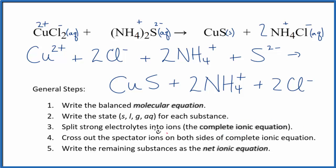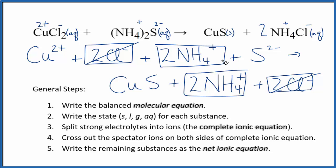Now we can cross these spectator ions out that are on both sides. So in the reactants here, I have two chloride ions. In the products, I also have two chloride ions. So I can cross those out, they're spectator ions. Two ammonium ions in the reactants, also in the products. Spectator ions, which we'll cross out.